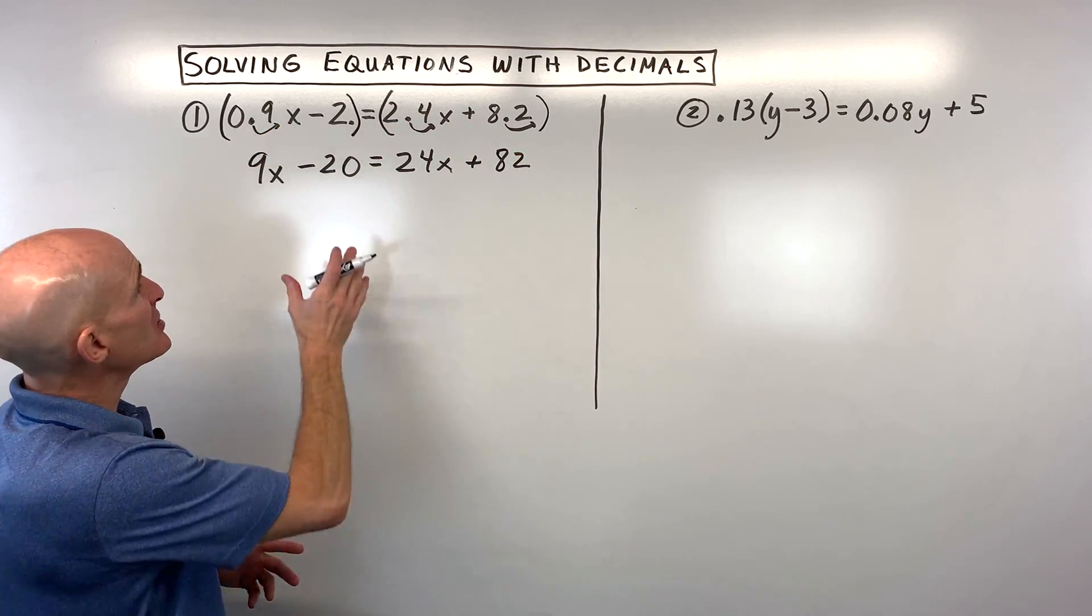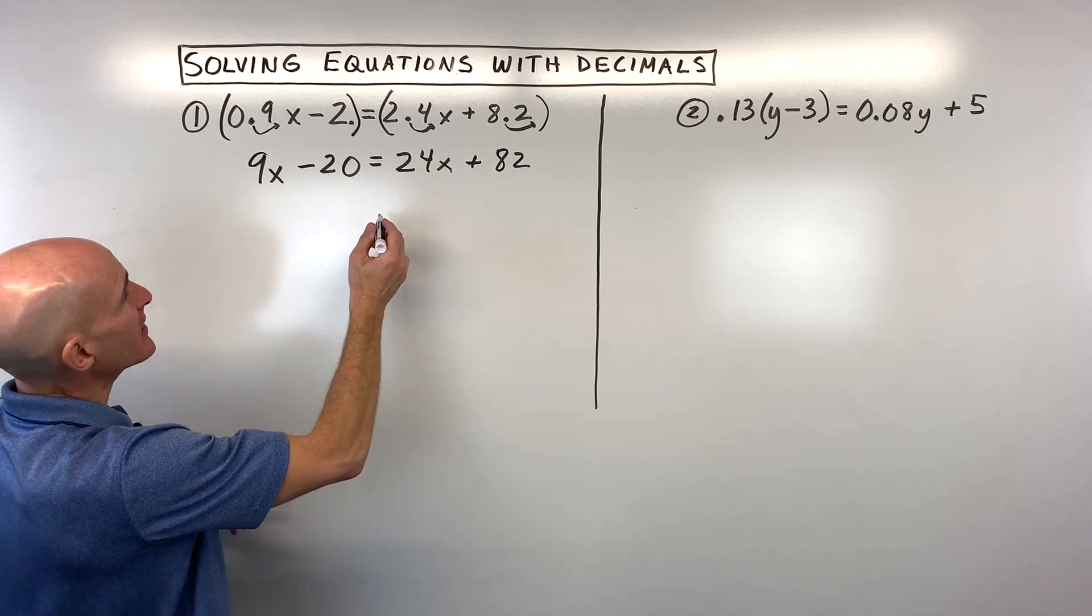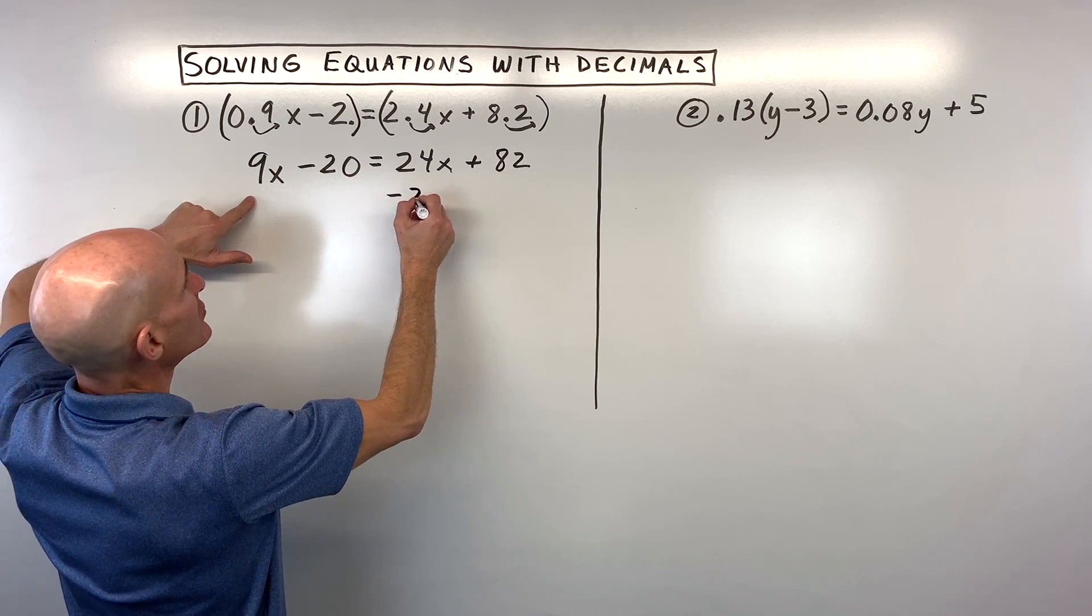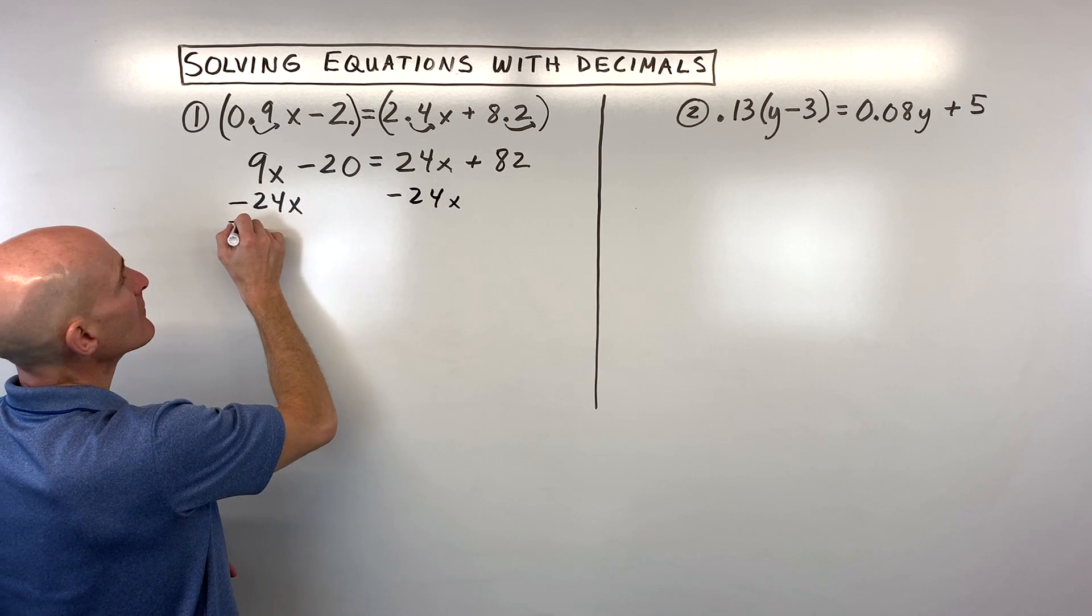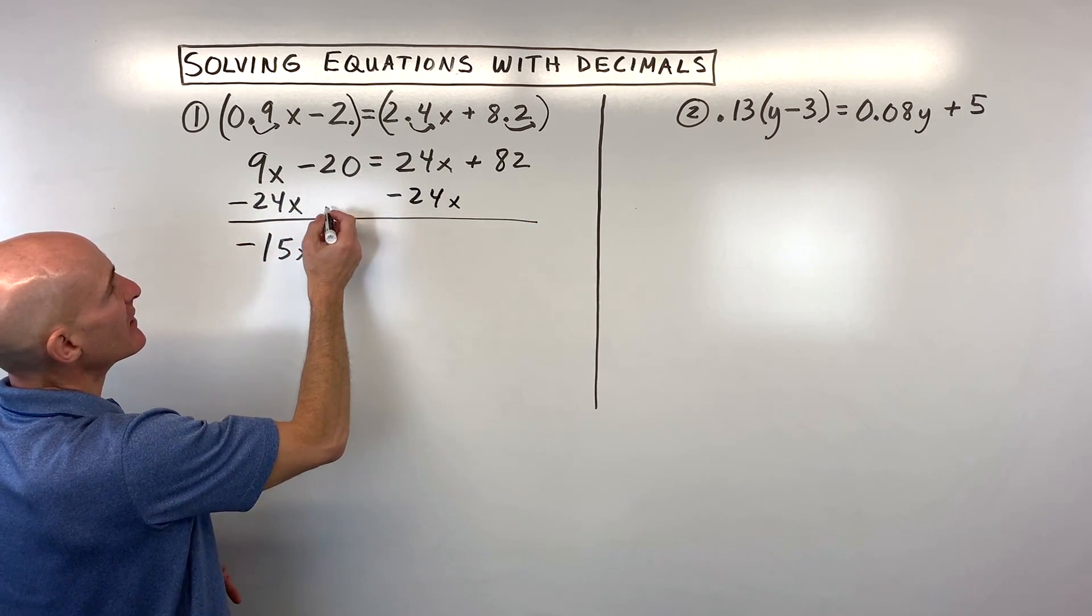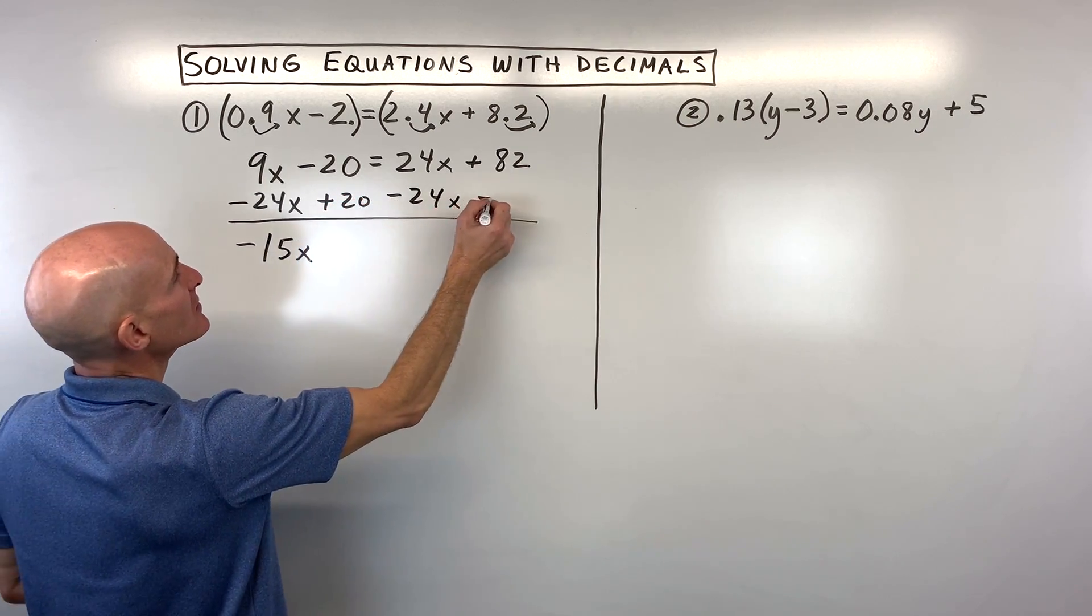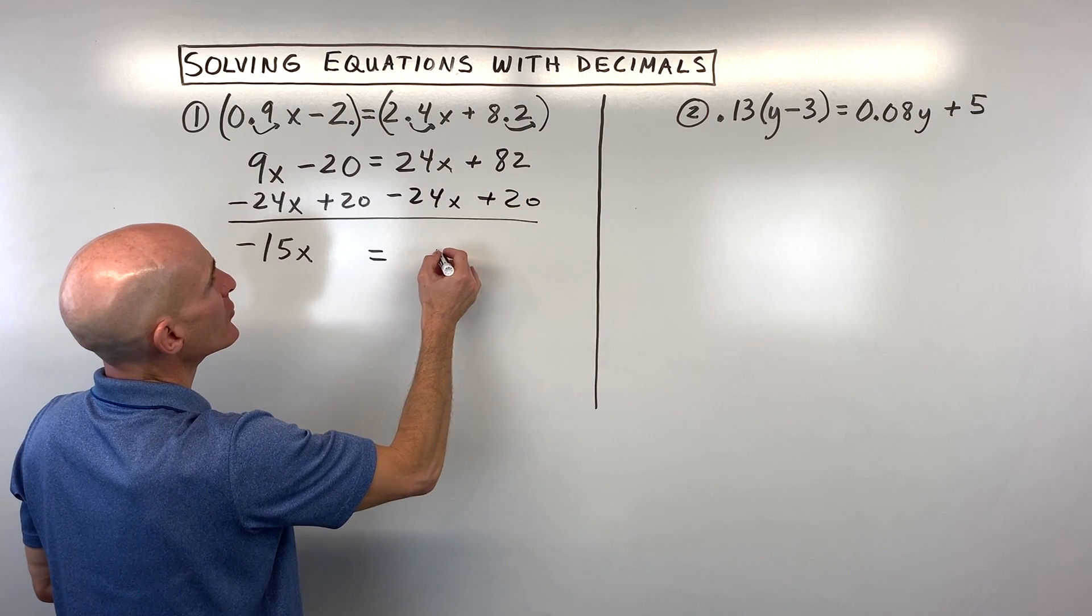Now it's a little bit easier to solve with these whole numbers here. Let's get the variables on one side and the numbers on the other side. So what I'm going to do is subtract 24x from both sides. That's going to give us negative 15x, and then I'm going to add 20 to both sides. So that's going to cancel out and give us 102.